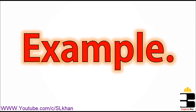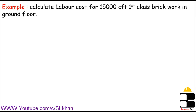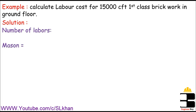I'll just do an example to understand the problem a little more. Let's say this is Example 1. We are asked to calculate labor cost per 15,000 CFT first class brick work in ground floor. This data is just enough to determine the labor cost. In the solution, the first thing we'll calculate is the number of labors. Let's focus on the mason cost — how many masons do we need for 15,000 CFT first class brick work? We can take the number of masons from that table.